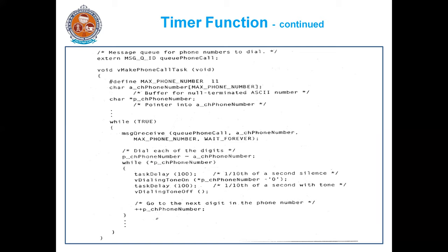Consider making a telephone call in the United States. Each of the tones that represents a digit must sound for one tenth of a second, and then it must be silent for one tenth of a second between tones. For example, if your phone number is 9848, it will dial the sound of nine for one tenth of a second, then keep silent for one tenth of a second, then dial the sound of eight for one tenth of a second, and so on.